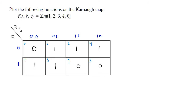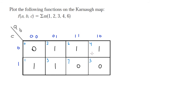The next step is to group the 1s together. The rules are: they can be by themselves, in a group of 2 next to each other, in a group of 4 next to each other, or in a group of 8. There are exceptions where you can wrap variables — for example, a 1 and a 1 on opposite edges can be grouped together. The maximum group size I can see here is 2, so just start wherever you want and try to stay organized or use color coding.